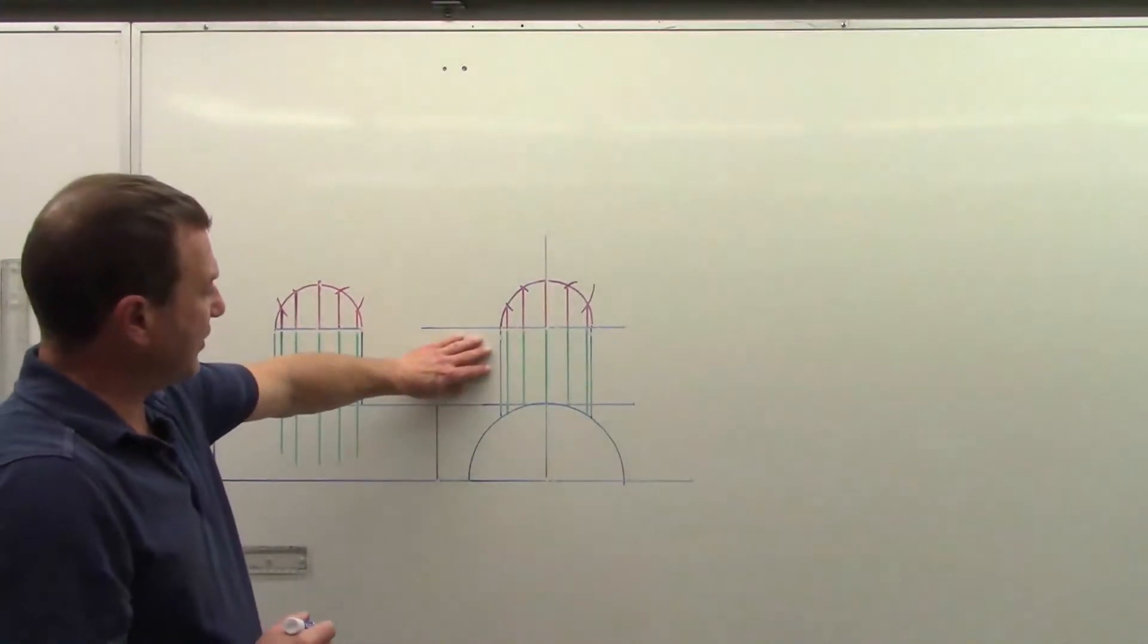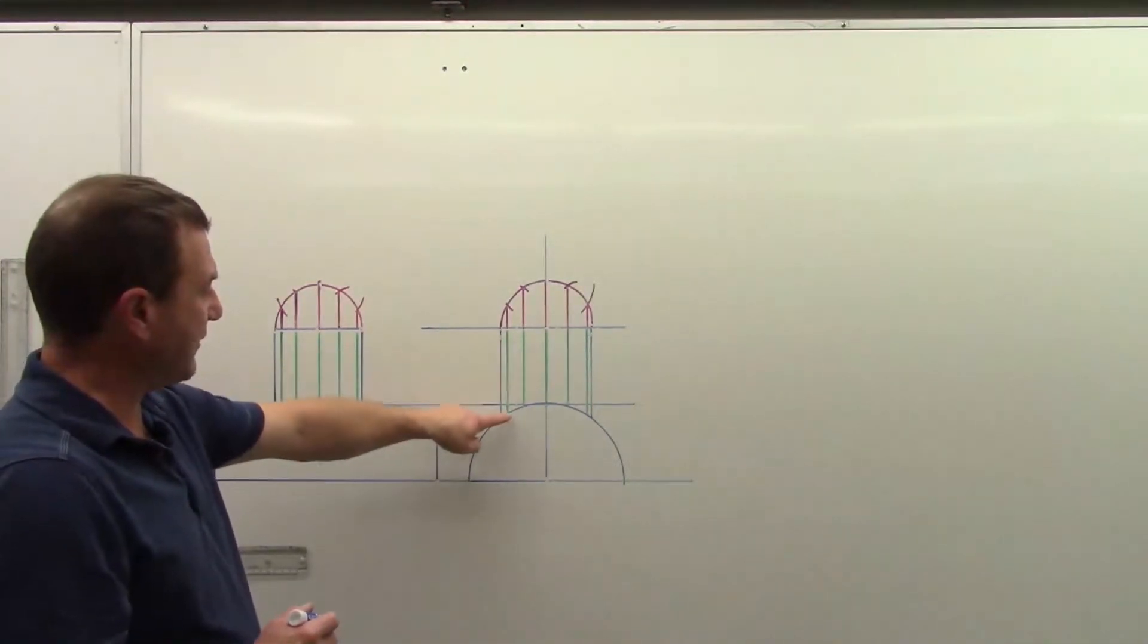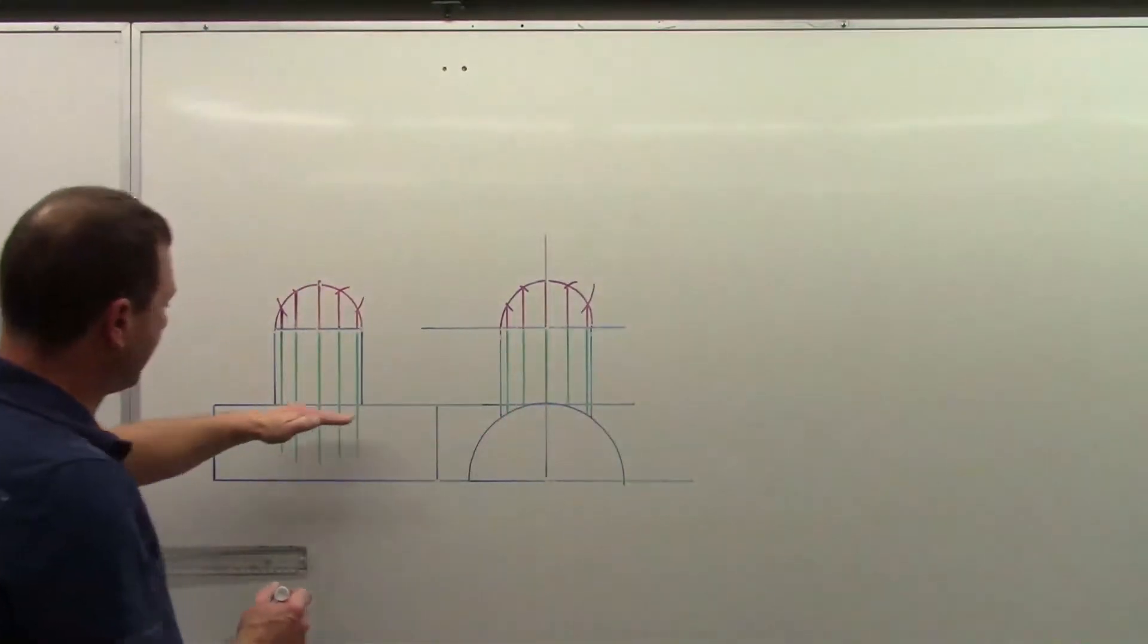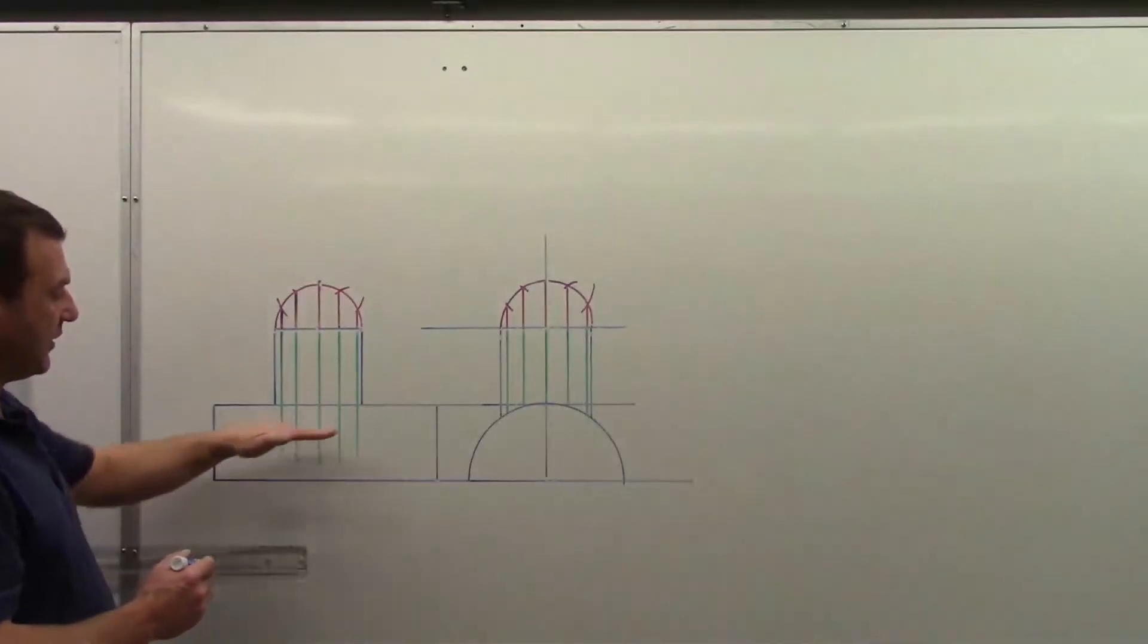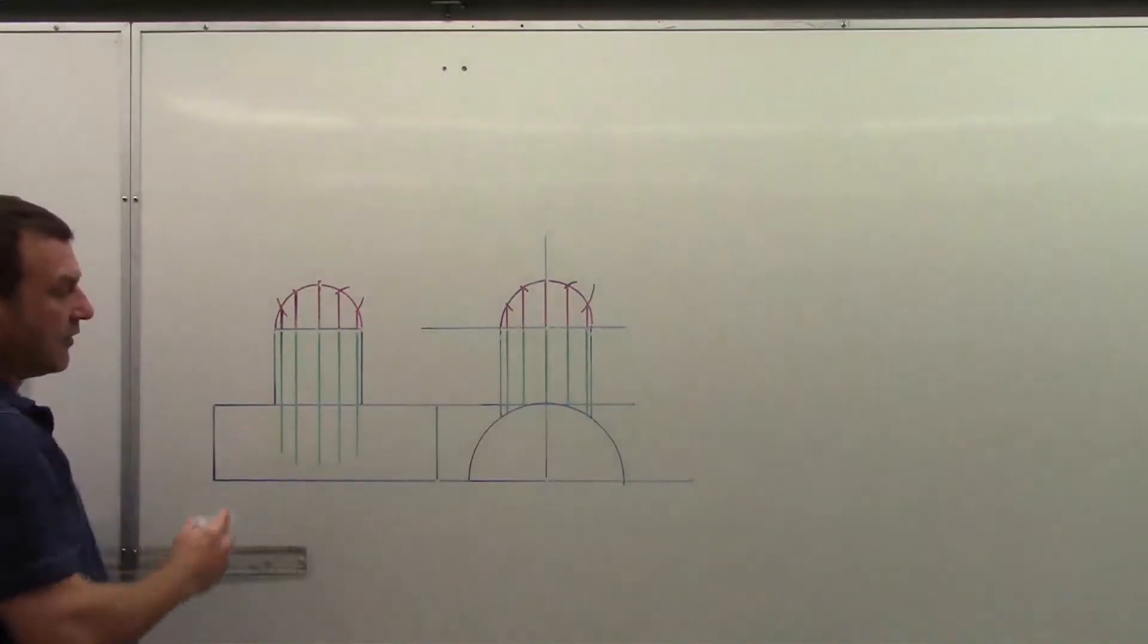But if we look at this view here, we can see that these heights, if we project them across, that is our height. So at each of these points here, they will come across, they will intersect the corresponding vertical element lines and that's going to establish our miter line.